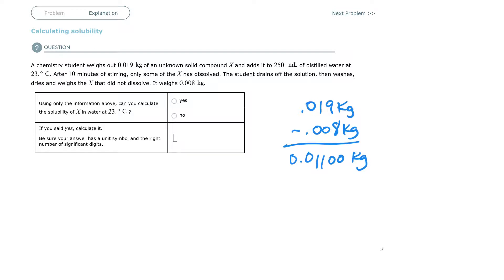All right, so you're simply going to put the top number, which is 0.011, over how much water you had, which was 250 mils of water. And that's going to give you 0.000044 kilograms per milliliter. I think you can use kilograms per milliliters for this question. Make sure you have significant digits.